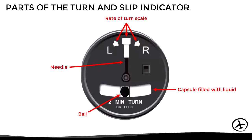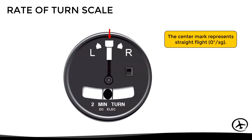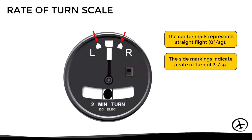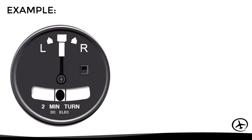Taking a closer look at the rate of turn scale: the center mark represents straight flight, or a rate of turn of zero degrees per second. The side markings represent a rate of turn of three degrees per second, which in aviation corresponds to the standard rate of turn — mainly used in instrument flight procedures. This standard rate allows the aircraft to complete a 360-degree turn in two minutes, as specified on the instrument.